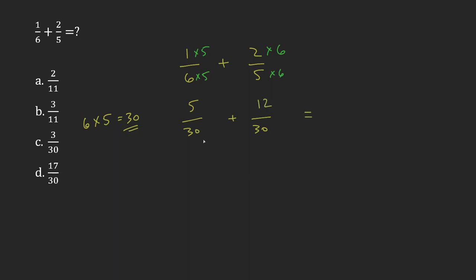So this is 5 over 30 plus 12 over 30. If the bottoms are the same, the denominators are the same, then you can just add the tops to get your answer. So 5 plus 12 is 17. This is 17 over 30, which means that my answer is D.